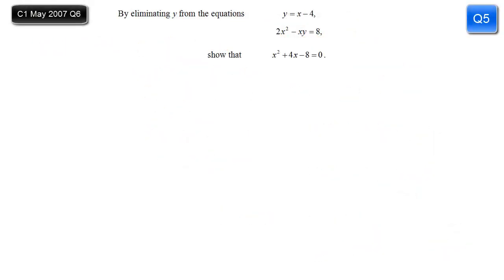Right, in this question we're given two equations, involving x and y. And by eliminating y from these, we are asked to show that x squared plus 4x minus 8 equals 0. So if we start by labeling the equations, so we know what we're talking about. To eliminate y, you need to substitute y equals from one equation into the other. And if you look at that, equation 1 is already in that form. So we can go ahead straight away and substitute equation 1 into equation 2.